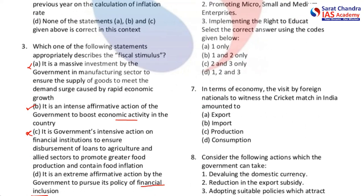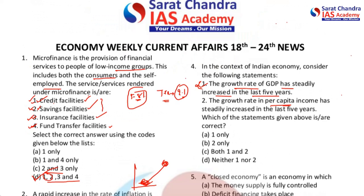The fourth question is about Indian economy. Consider: first, the growth rate of GDP has steadily increased in the last five years. You should understand that our growth rate has not steadily increased because the COVID year directly impacted growth rate, so the first statement is wrong. Coming to the second statement: growth rate in per capita income has steadily increased in the last five years. India has achieved a total fertility rate of 2.1 and population growth has almost stabilized.